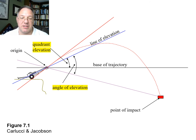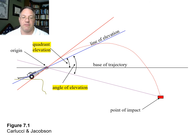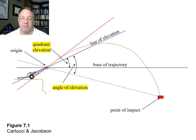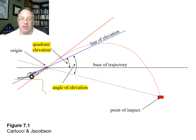The quadrant elevation (QE) is the angular measurement from the level base of trajectory to the line of elevation — how far above level our gun is set, regardless of where the target is. The angle of elevation is different: it is the angle between the line of elevation and the line of sight to the actual target. So quadrant elevation is from the level baseline to the gun tube, while angle of elevation is from the target to the gun tube line. Keep those two distinct.